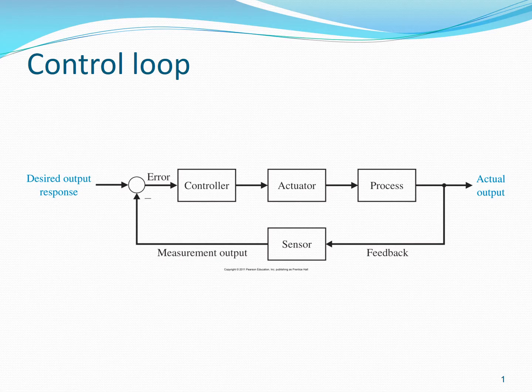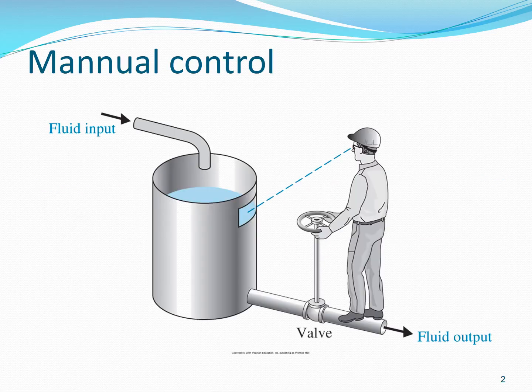Consider again our first example of the liquid level system. In terms of control, the process consists of a cylindrical tank with inflow and outflow of liquid. The output is the variable to be controlled, which in this case is the level of the liquid inside the tank. The control input is the variable through which we can control the output — in this case, the control input is the opening of the valve.